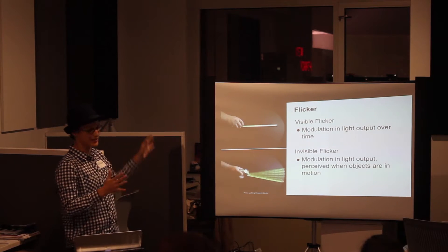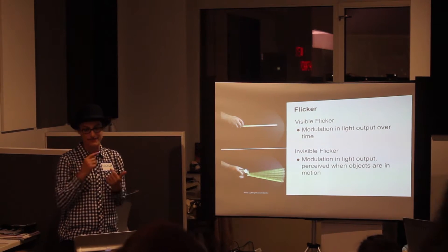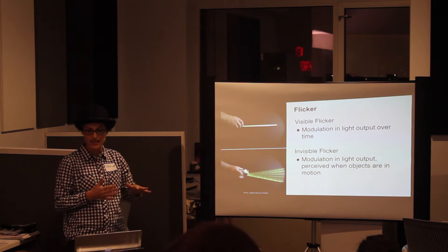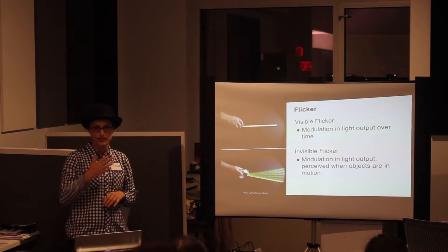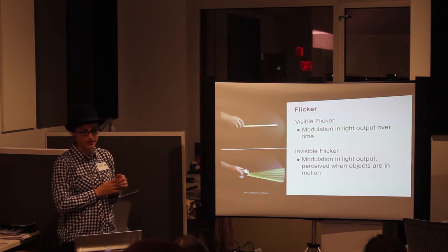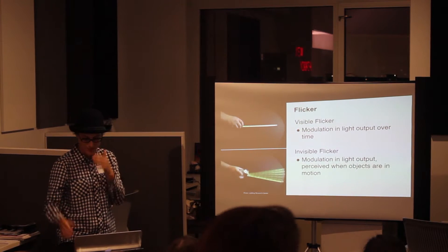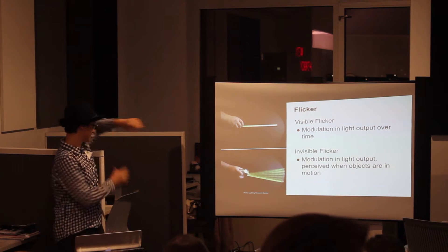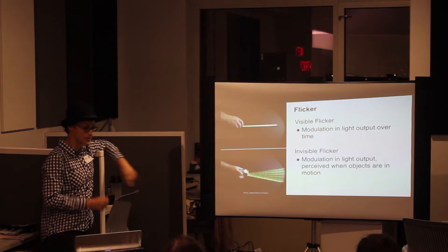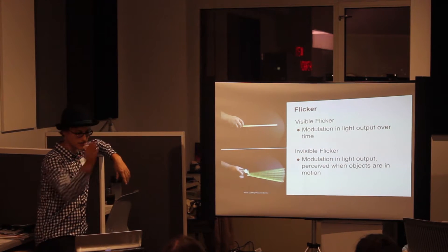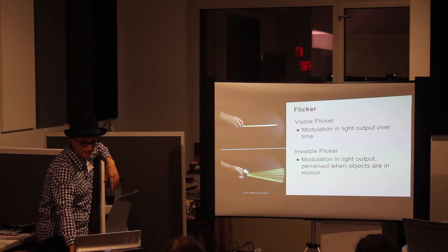To define flicker, there are two types as defined by the IEE. Visible flicker is a modulation in light output over time. Invisible flicker is also a modulation in light output over time, but you can only perceive it when things are in motion — you see a smooth image above, but below you can see the stroboscopic effect. It's not smooth motion; it's staccato imaging.